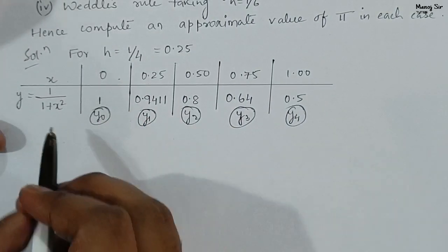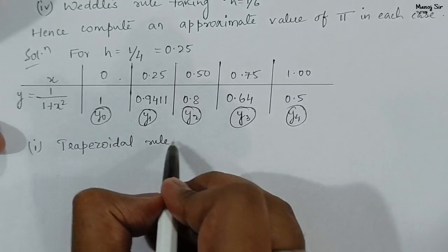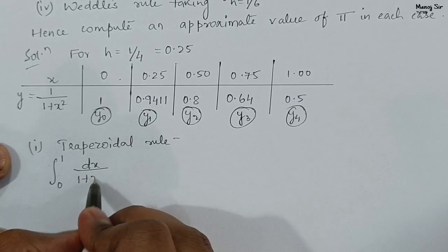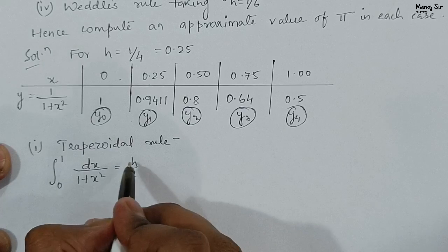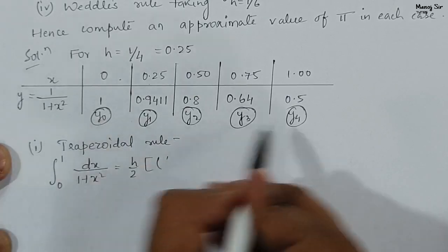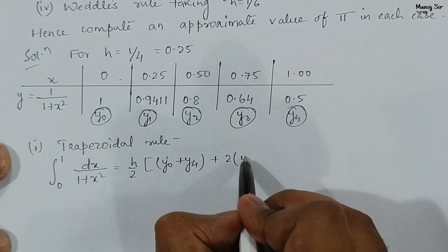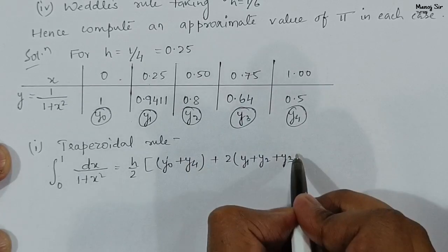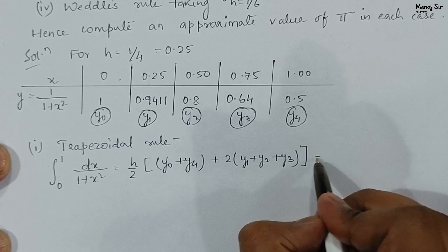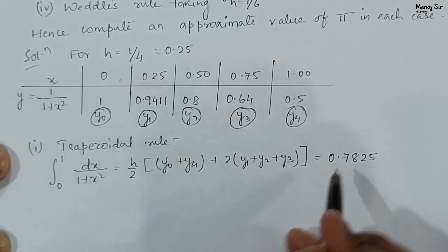We will find the value of the integration by the trapezoidal rule. The formula is: ∫₀¹ dx/(1+x²) = h/2 × [(y₀ + y₄) + 2(y₁ + y₂ + y₃)]. With h = 0.25 and putting all y values, you get the value as 0.7825.